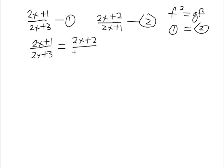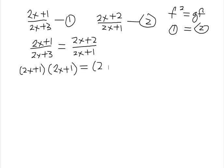We cross-multiply to solve: moving denominators across, (2x+1) times (2x+1) equals (2x+2) times (2x+3). This gives us the equation to expand and solve.